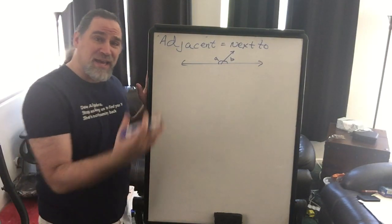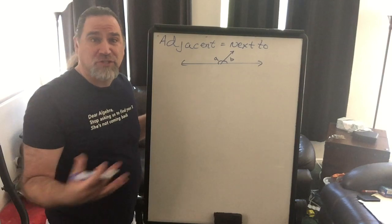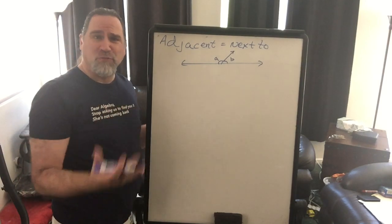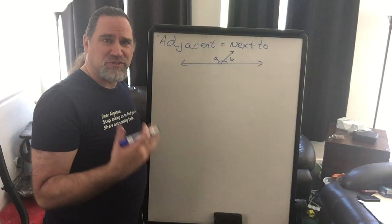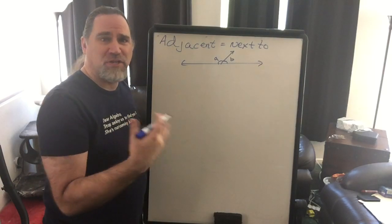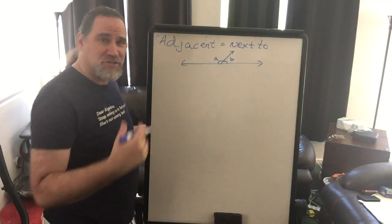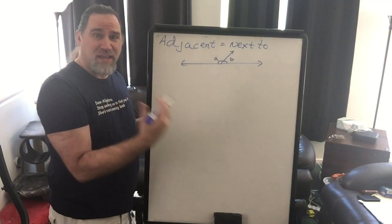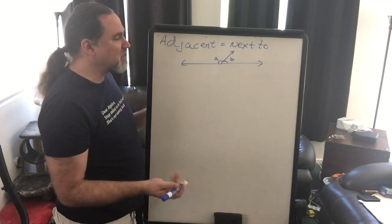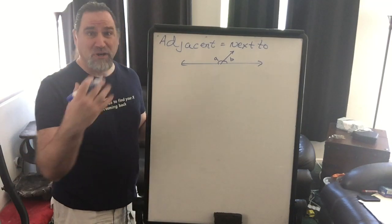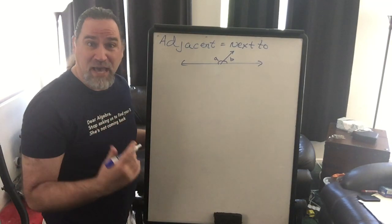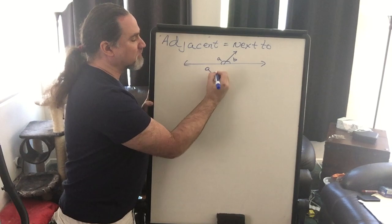Now angle A and B are by definition adjacent. They are right next to each other. The reason we bring this up is because adjacent angles tend to have something to do with each other. That angle actually has something to do with the other angle.